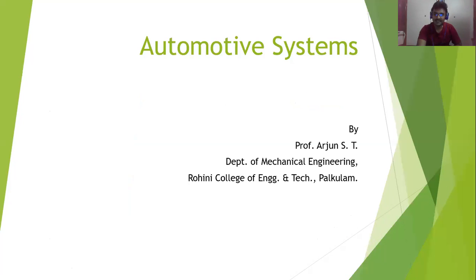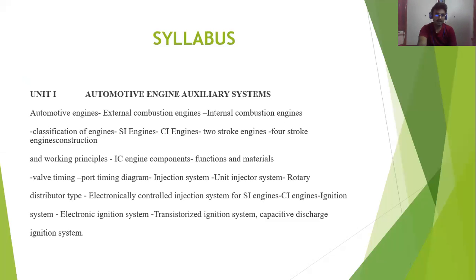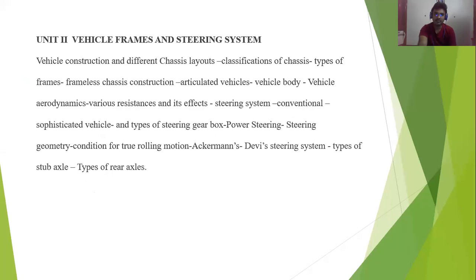Unit one is Automotive Engine Auxiliary Systems. In this unit you will be studying about types of engines — petrol engine, two-stroke engine — and after that you will be studying valve timing diagrams, injection system, and ignition system, including the fuel injection system.